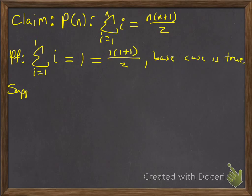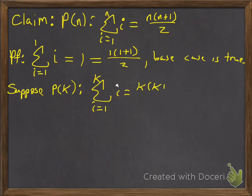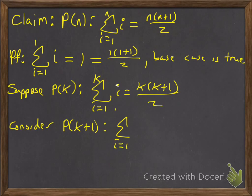We're going to suppose — I'll call it P(k) — that the sum from i equals 1 to k of i equals k(k+1) over 2. So we're adding up the first k integers and supposing that equals k(k+1) over 2. Now what we're going to do is consider the k plus 1 case, which is the sum from i equals 1 to k+1 of i.